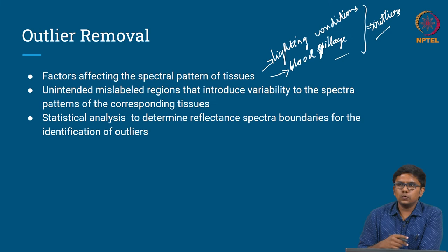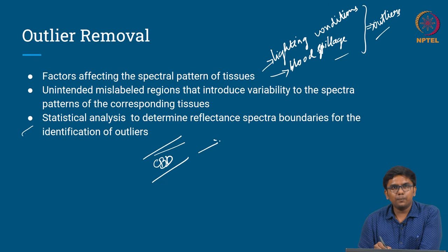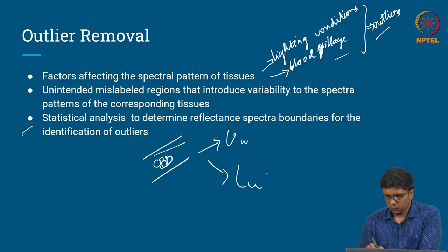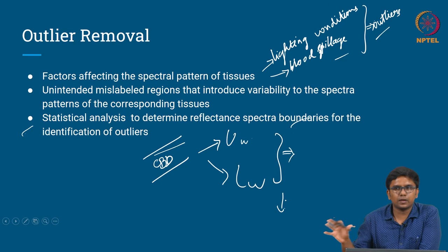For example, for the common bile duct — one of the target tissues — they determine upper and lower wavelength boundaries. Only reflectance images that fall within this wavelength range are considered for processing; those outside are considered outliers and removed.